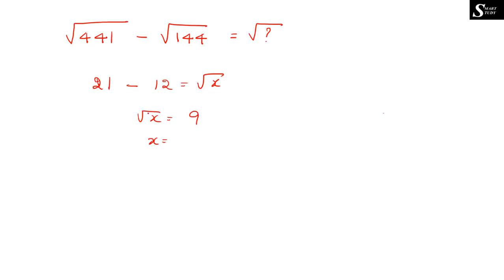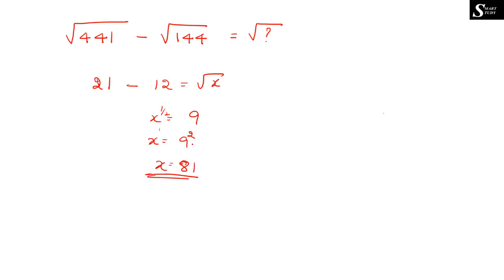So √x = 9. Squaring both sides (transferring the power 1/2 to the other side gives reciprocal power 2/1), x = 9² = 81. Therefore x = 81 is the answer.